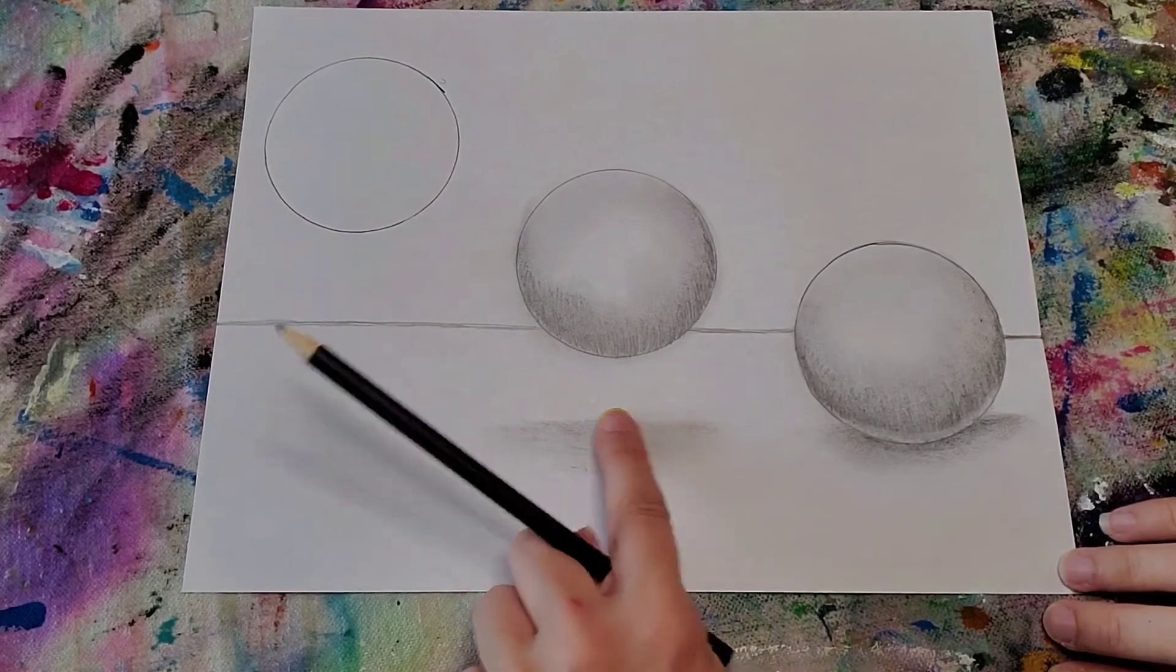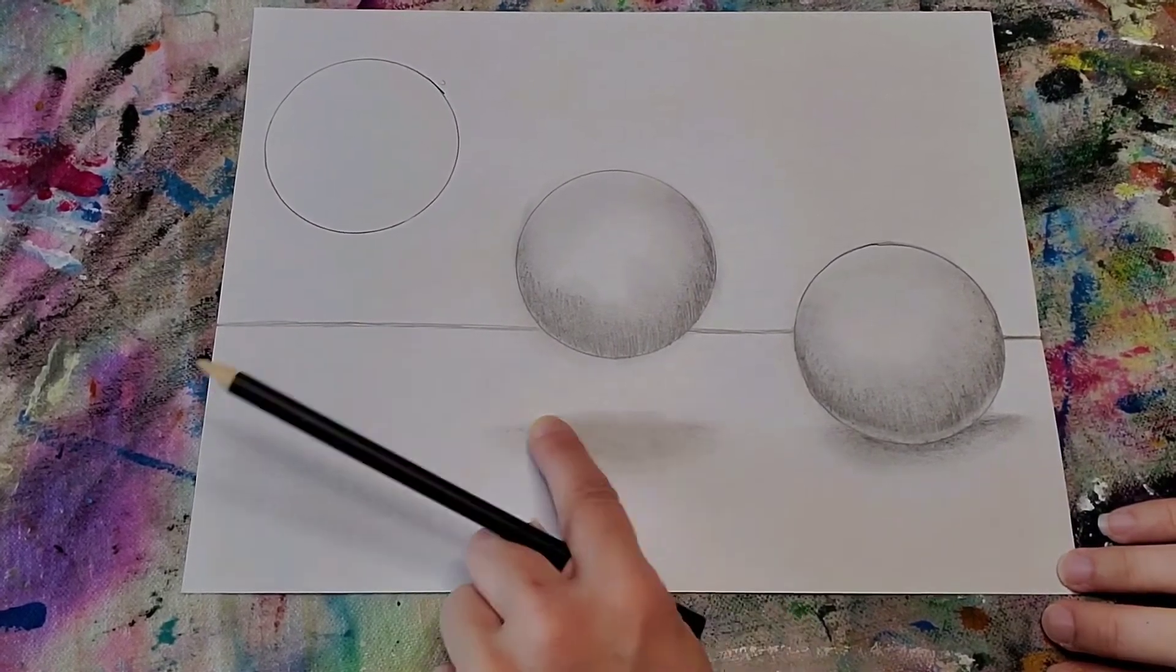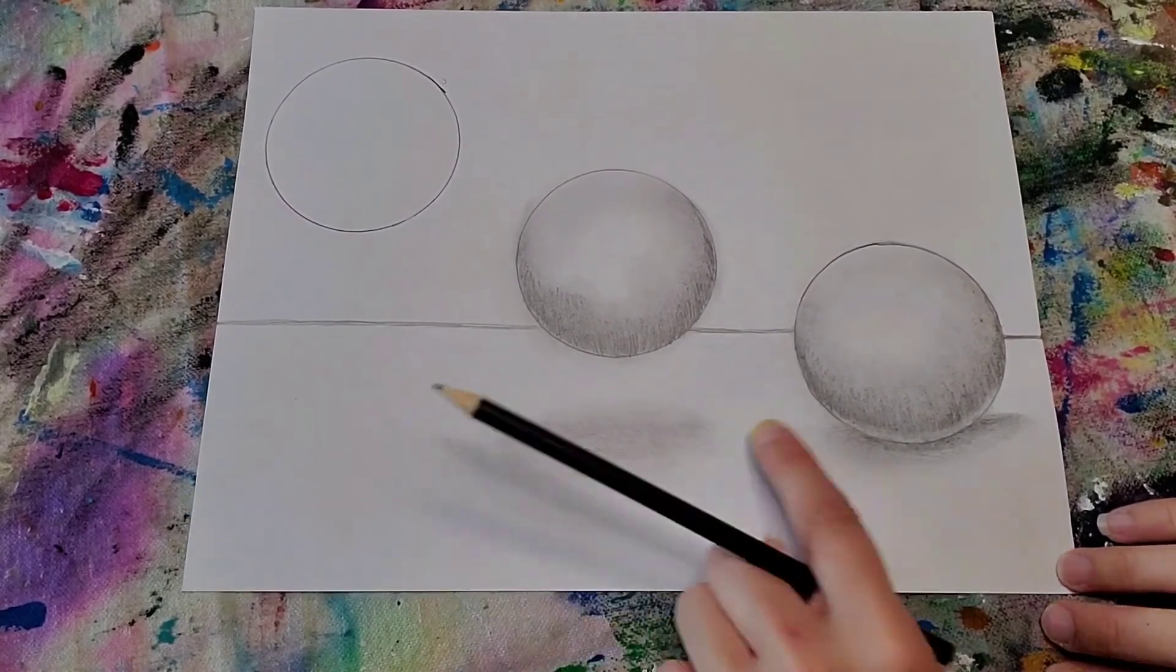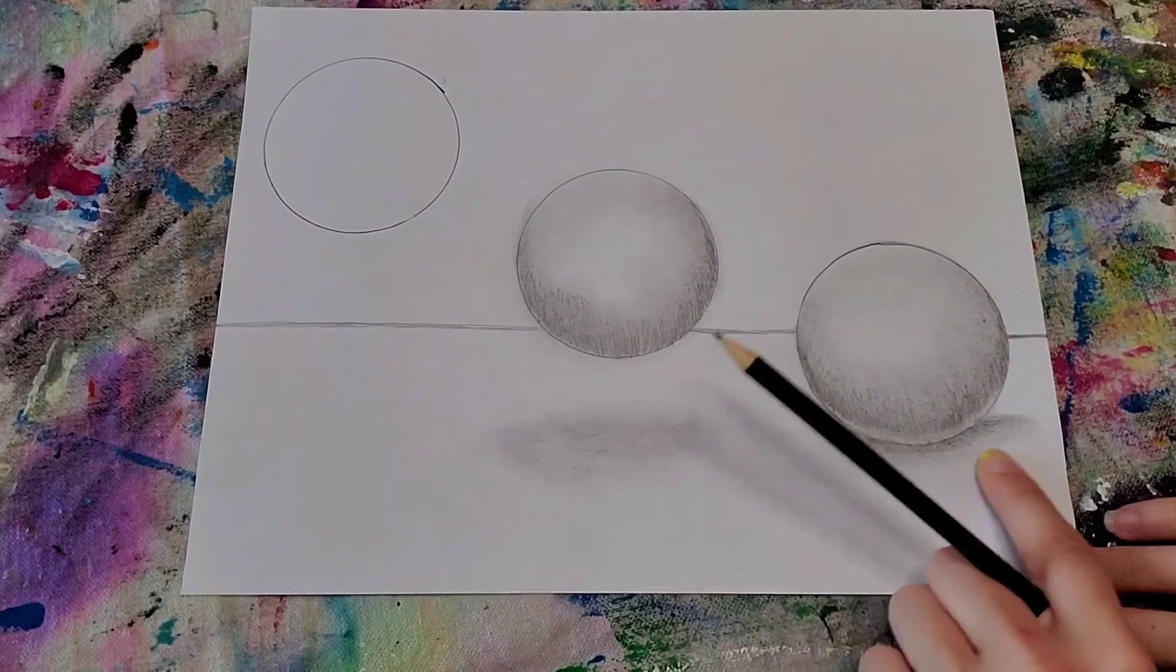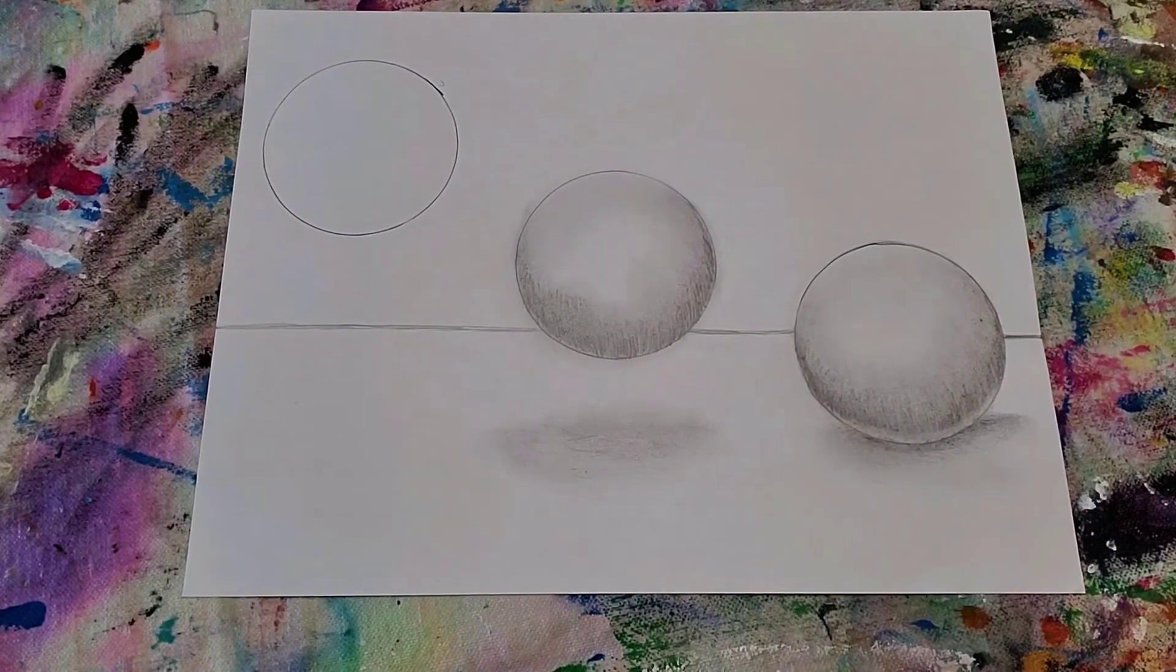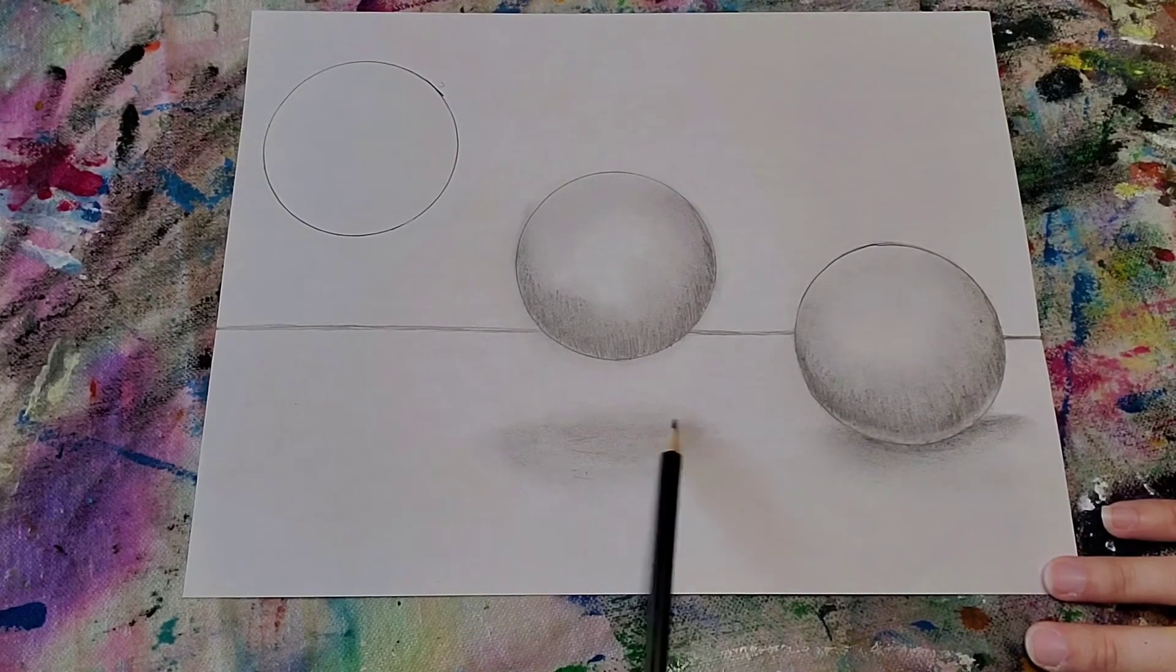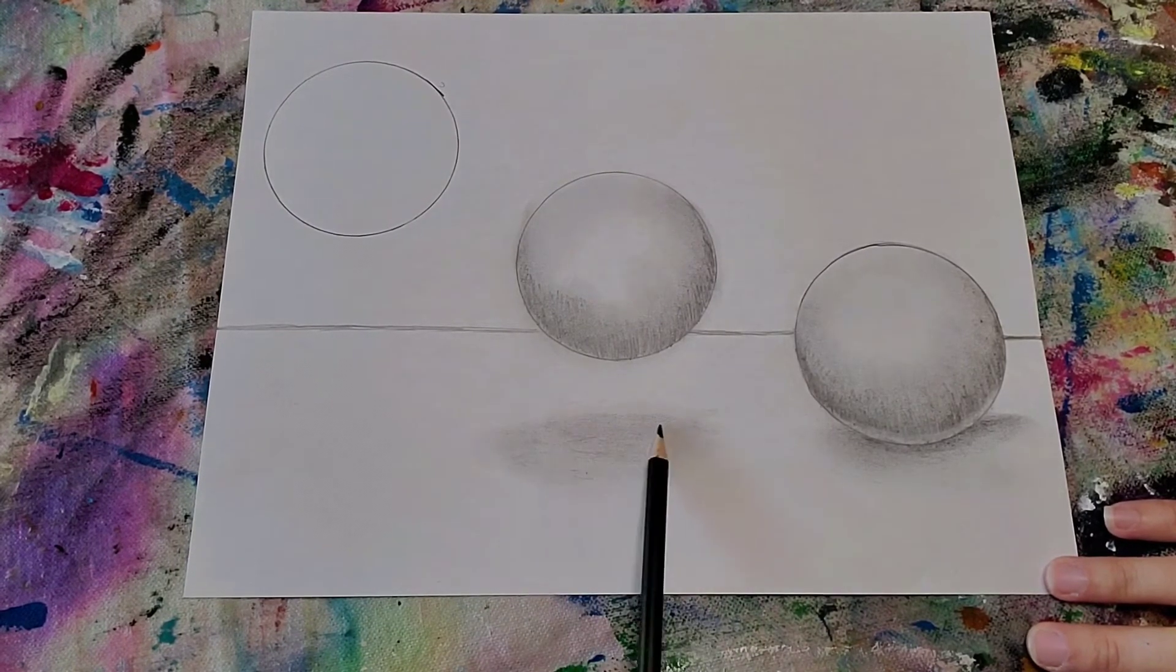Oops, I want this to look a little bit more roundish. So there we have it, it went up a little bit higher. Okay, so that's my second shadow. Make it a little bit darker there.